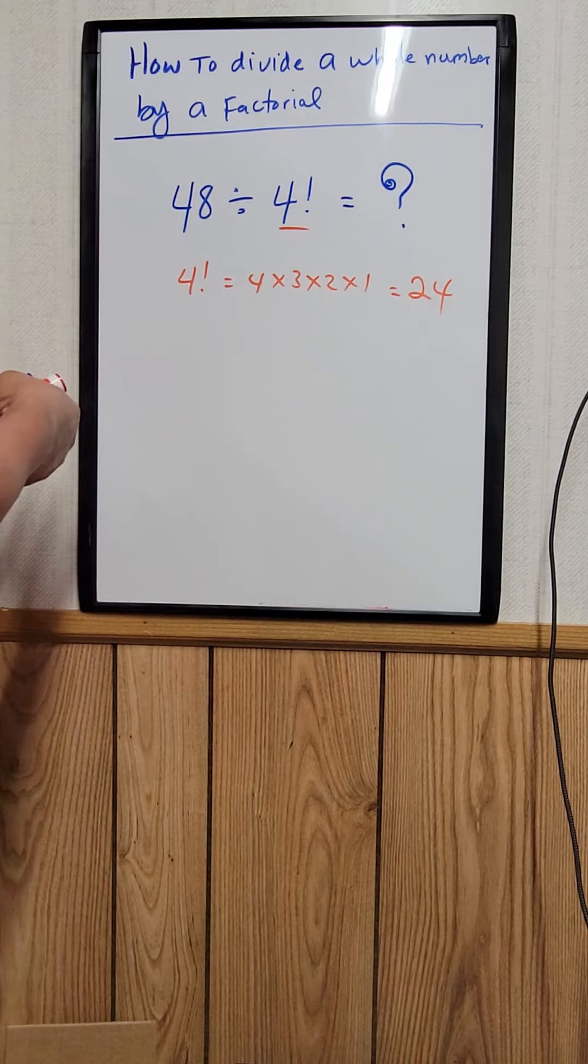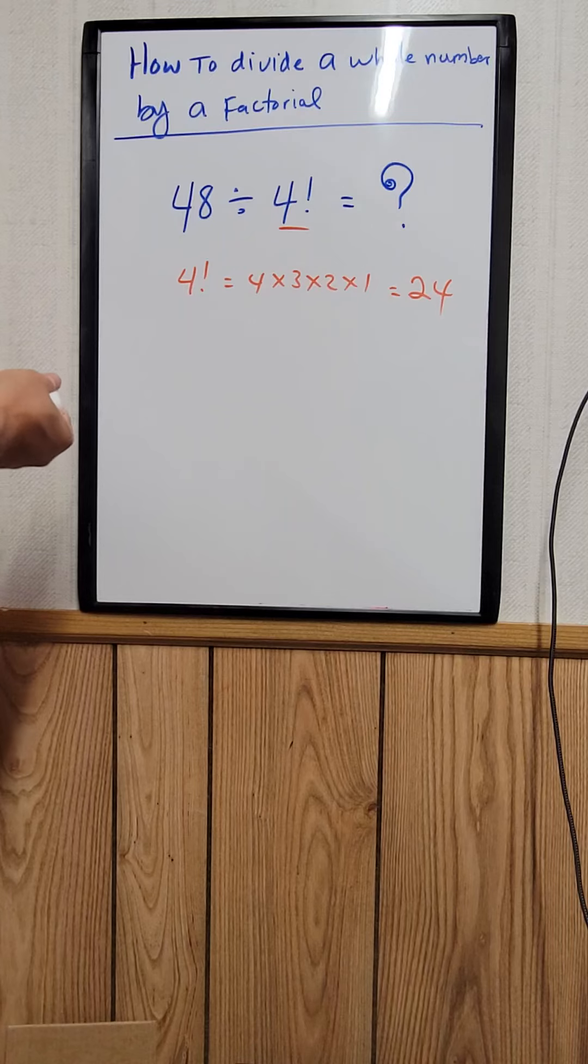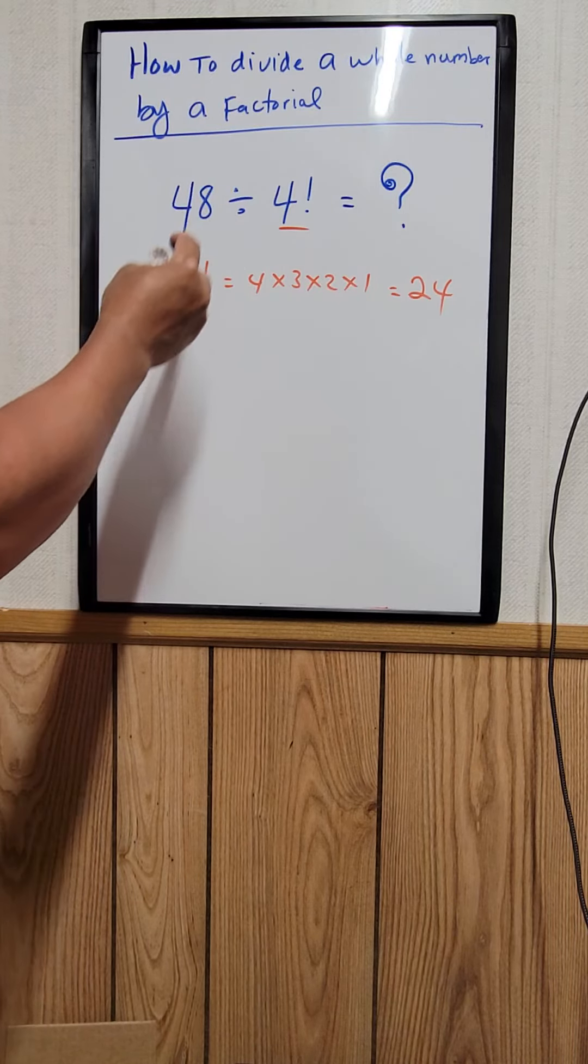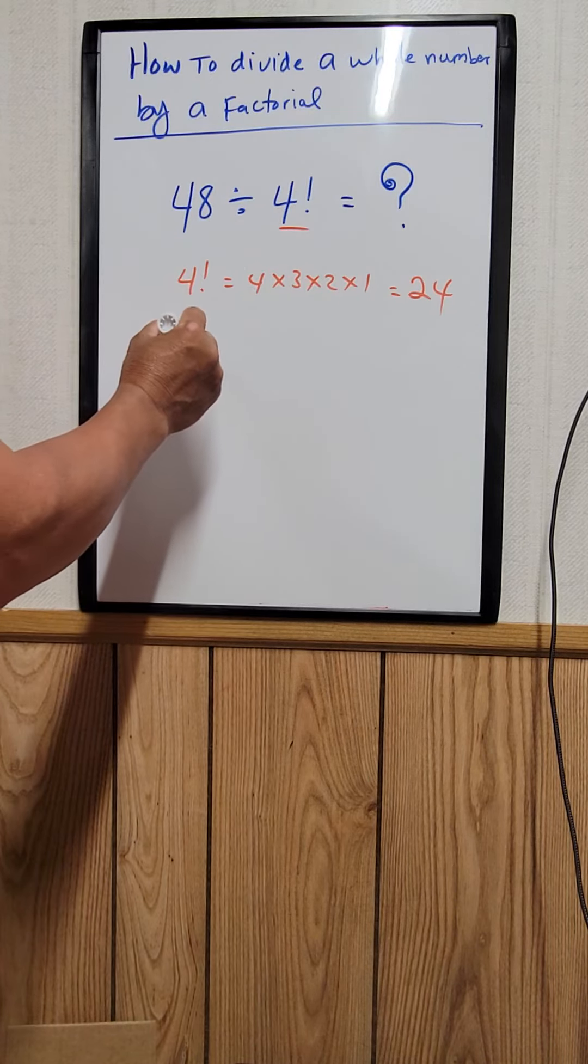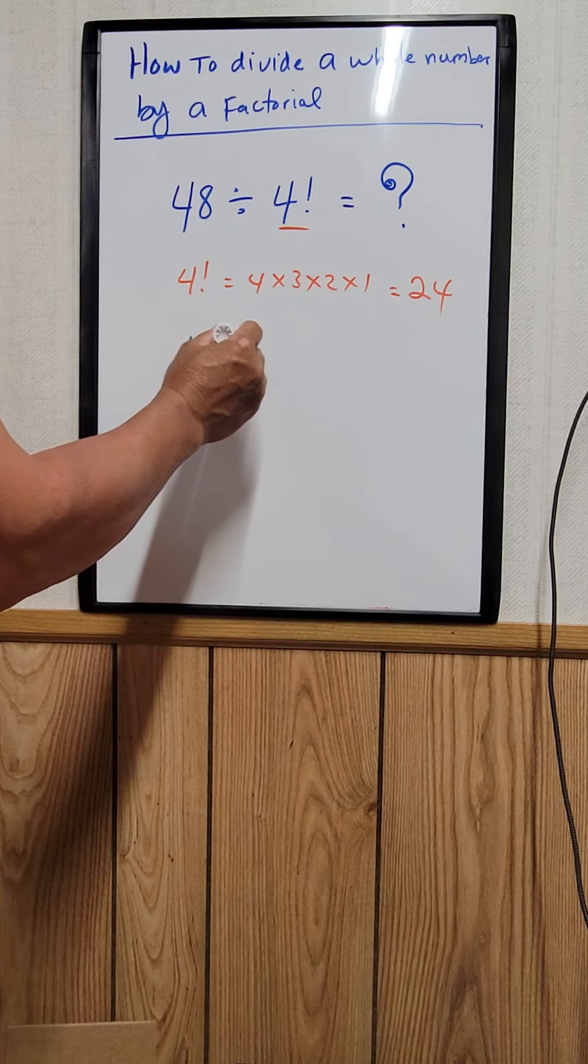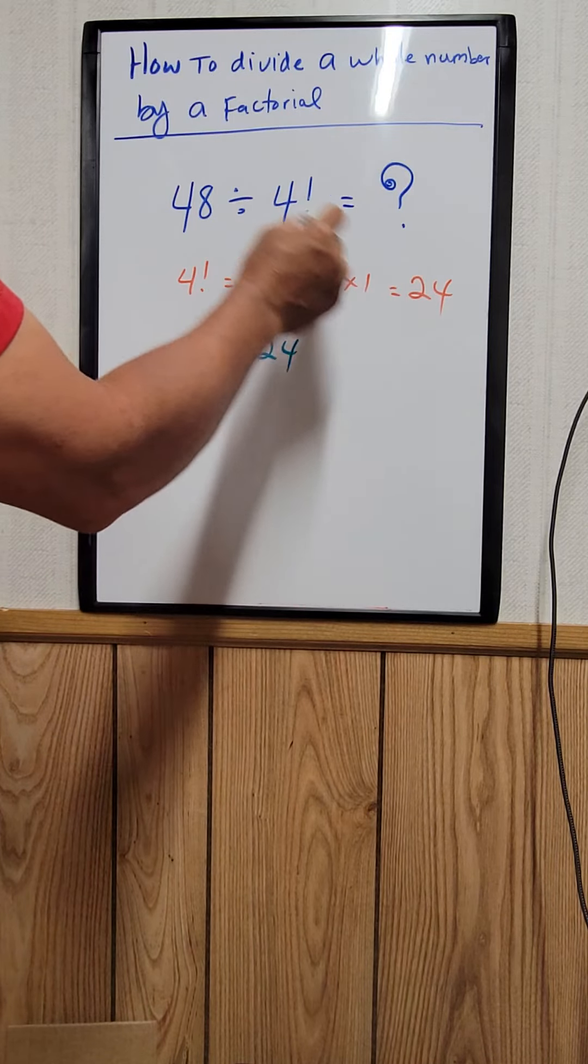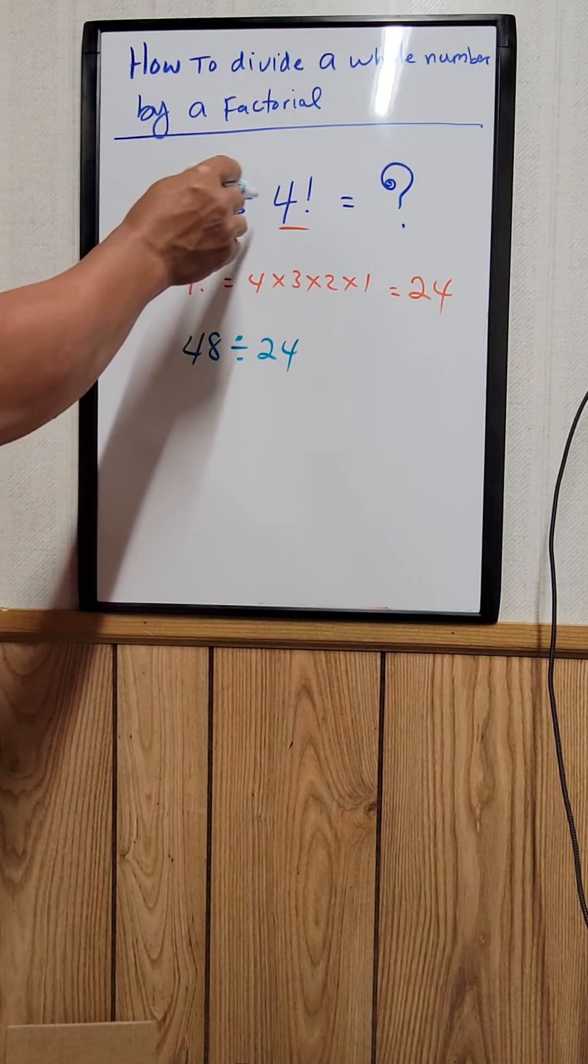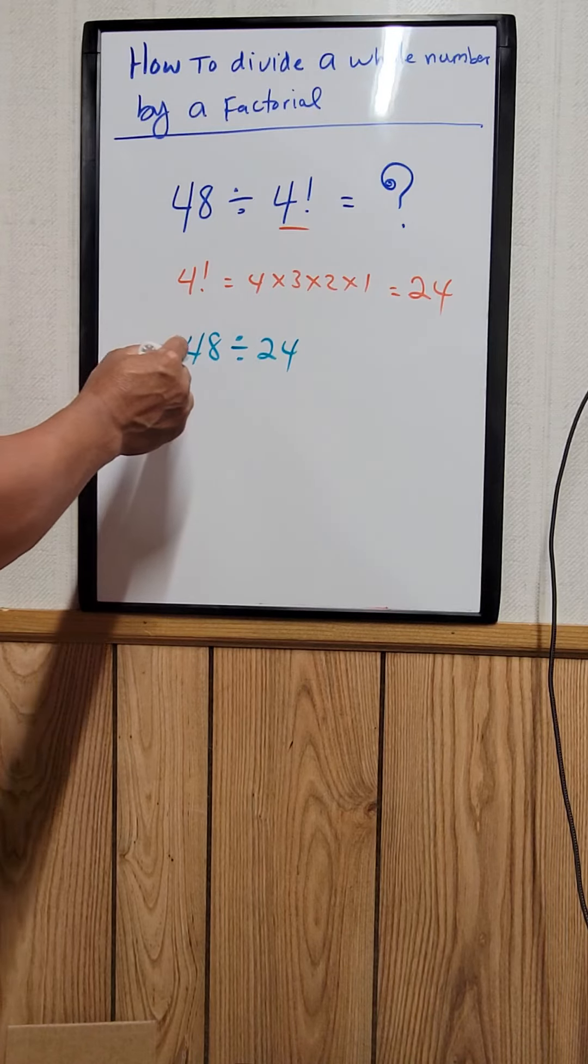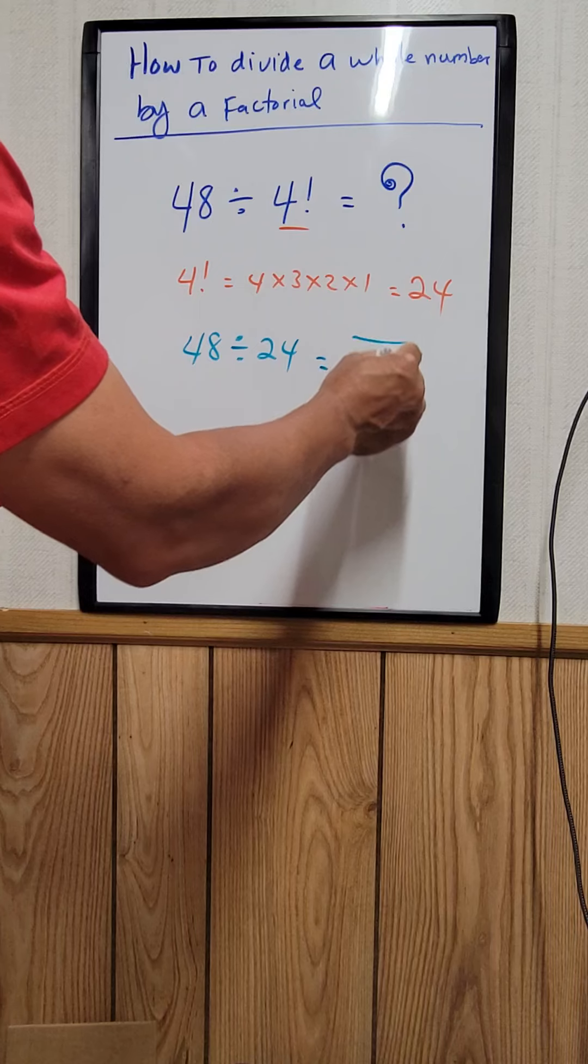Now we can rewrite this equation as 48 divided by 24. So substitute 24 for 4 factorial. So 48 divided by 24 is equal to 2. That's your answer.